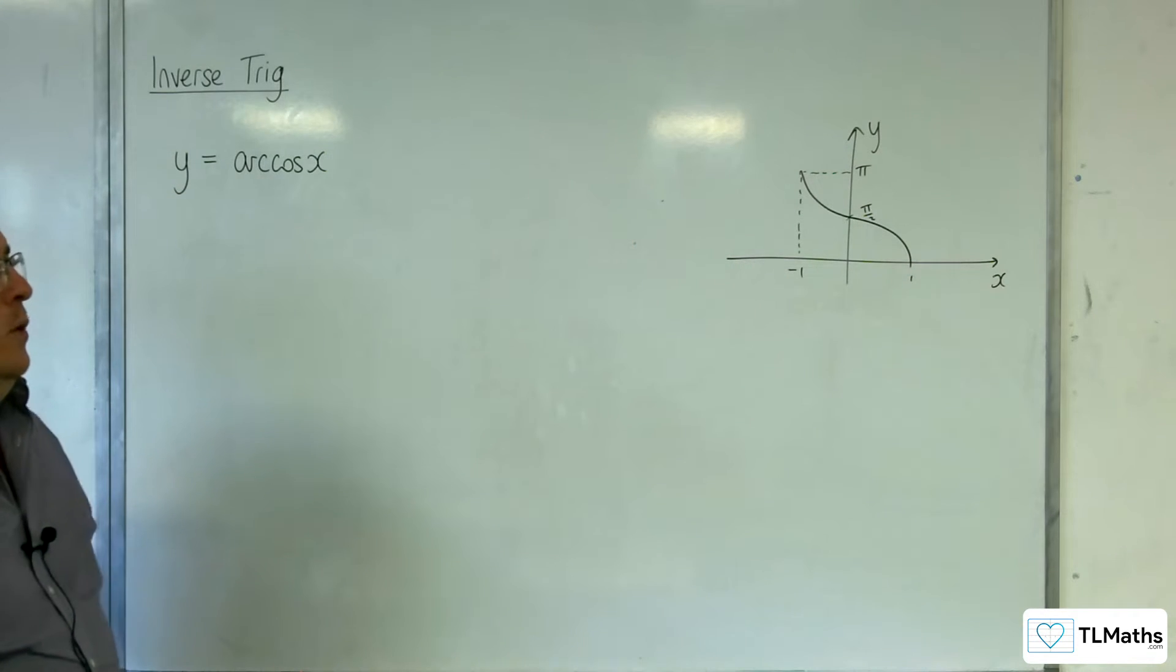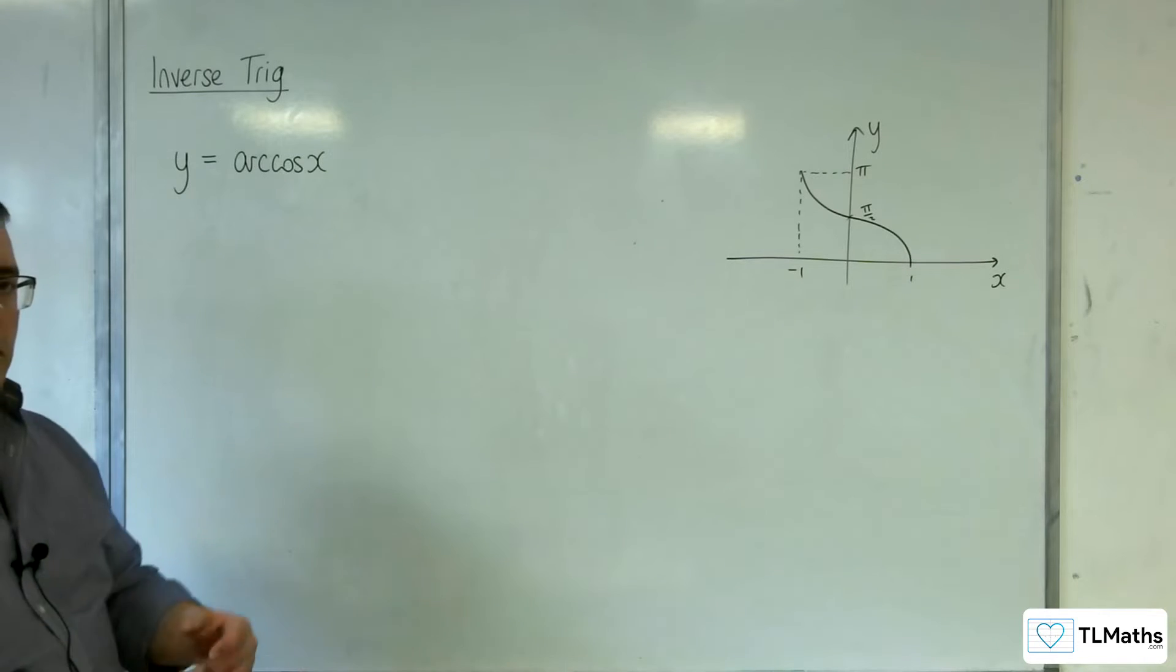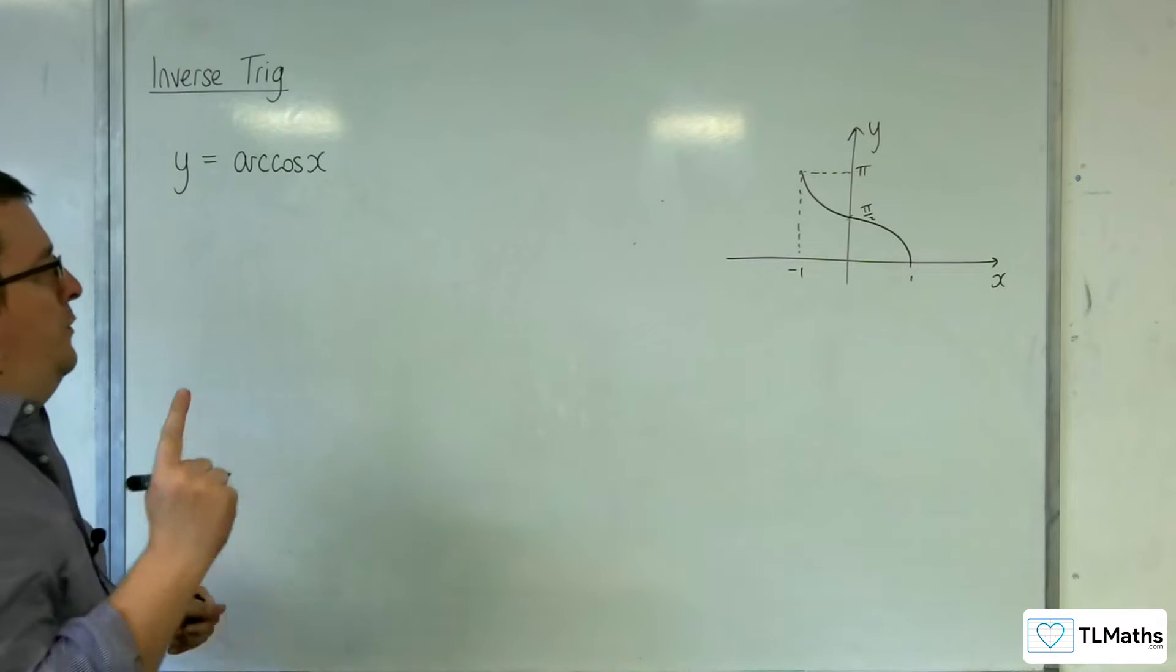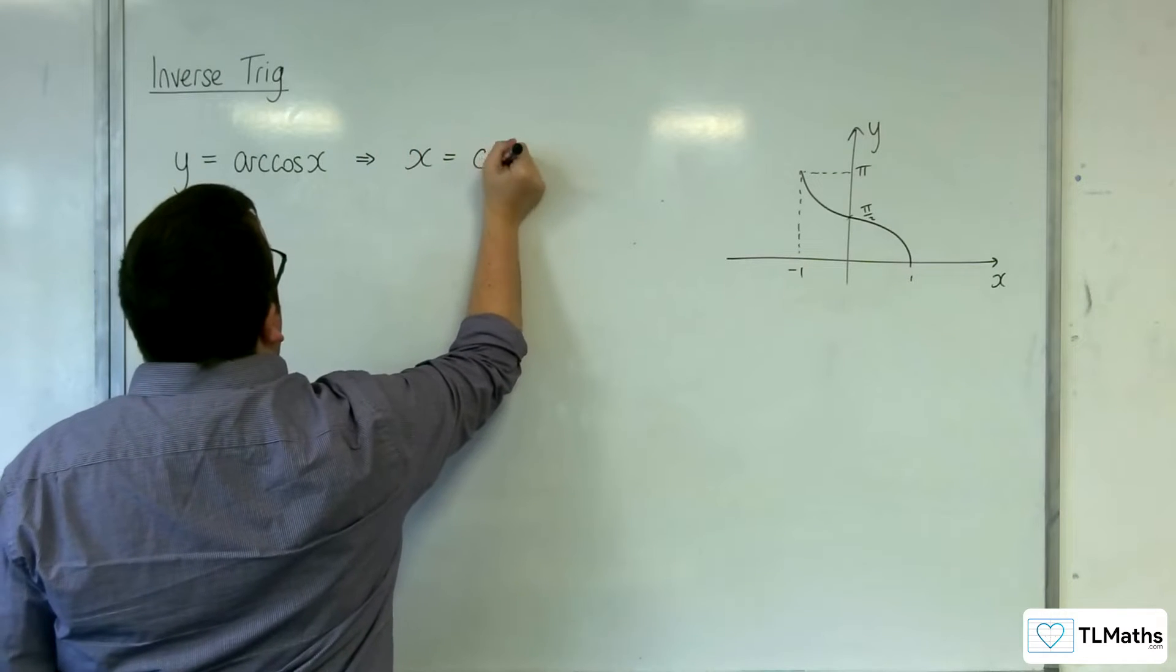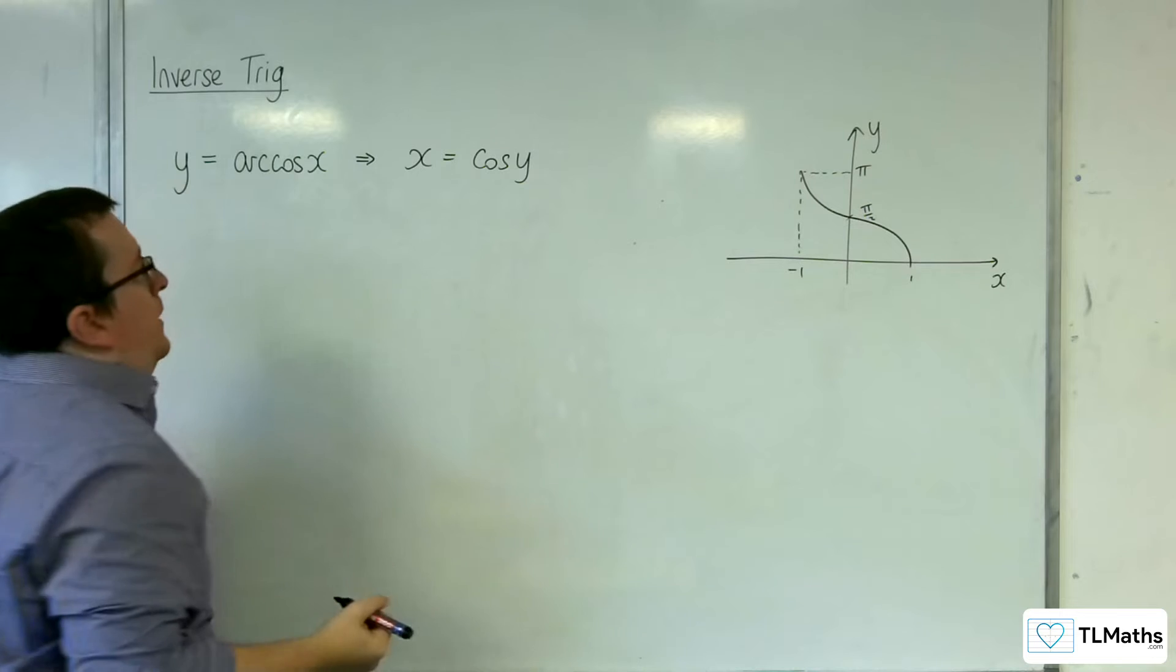Let's go through that process that we went through with arc sine. The first thing I'm going to do is rewrite it as x equals cosine of y.